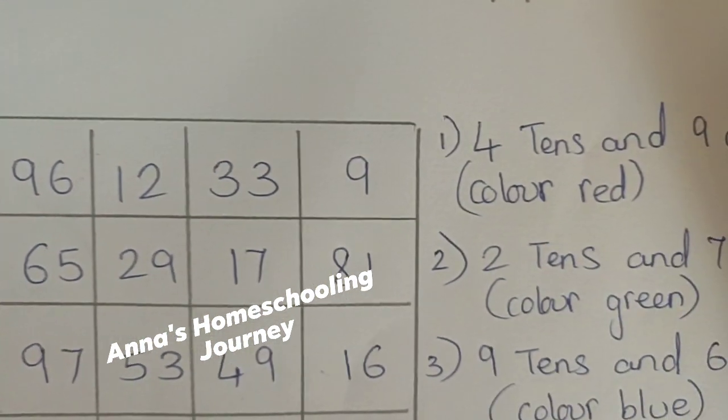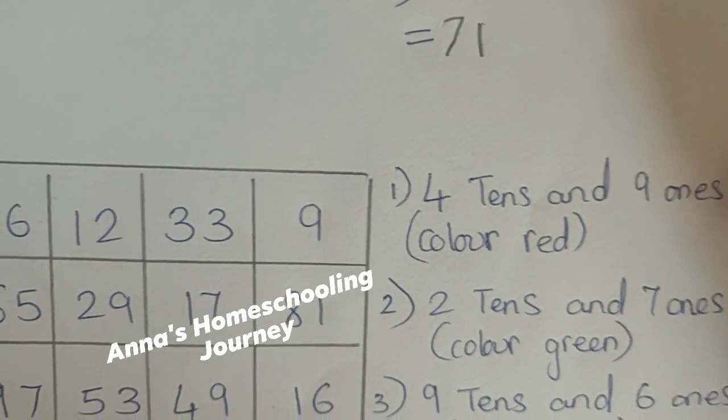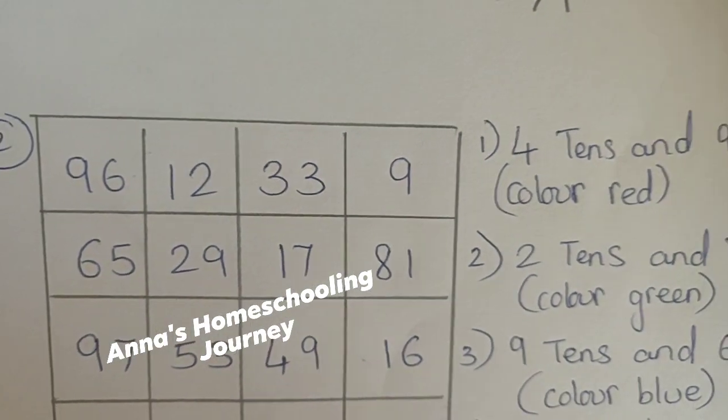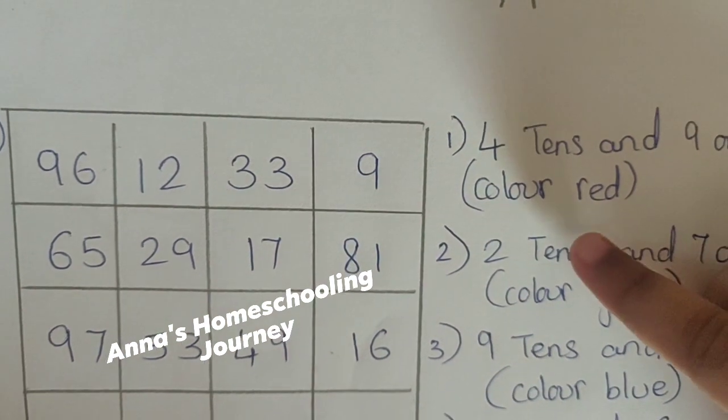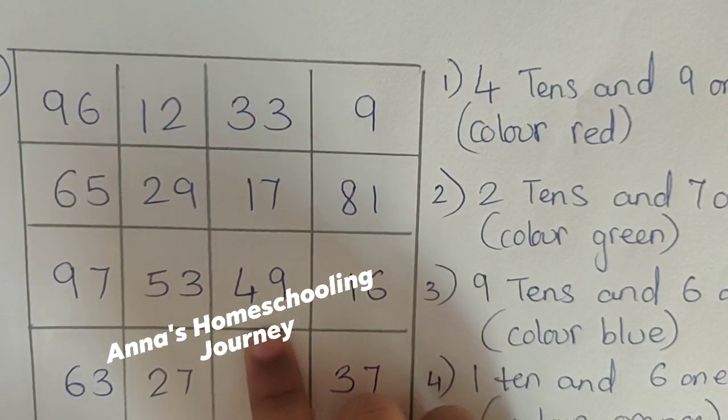So, what is the first one? 4 tens and 9 ones. So, where is 4 tens and 9 ones? Correct. So, it is 49.